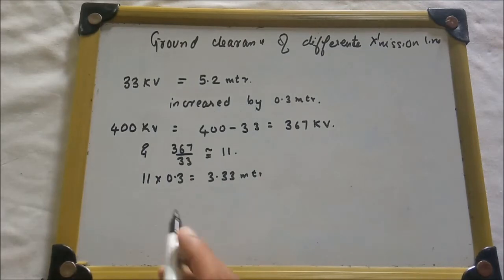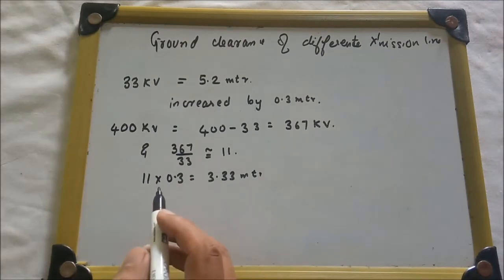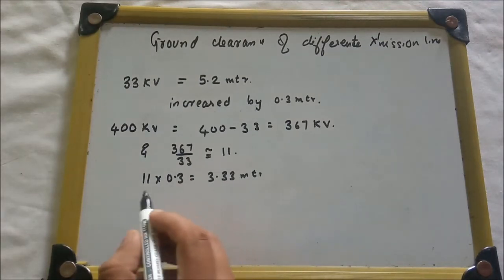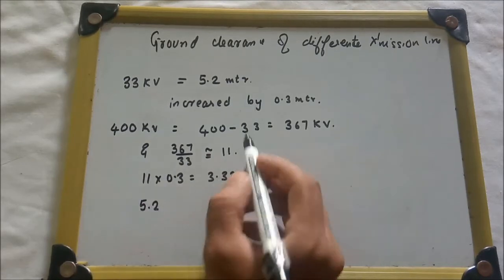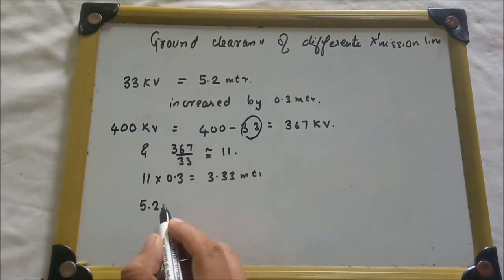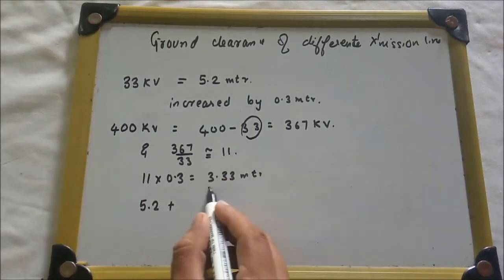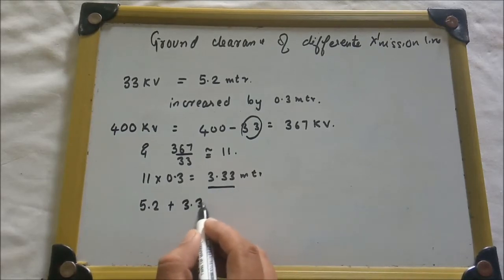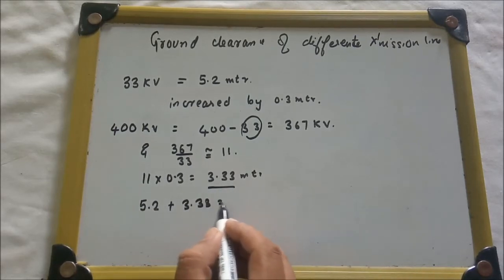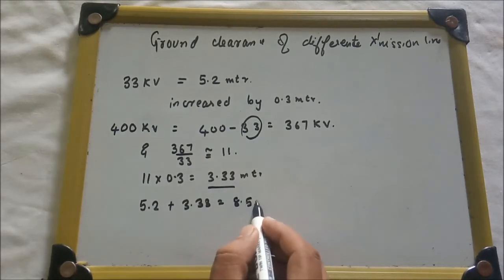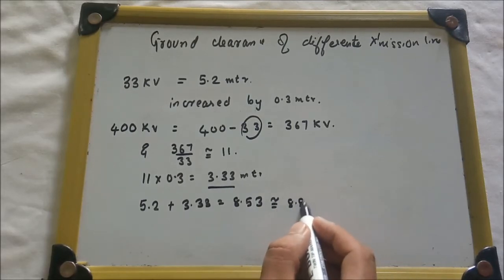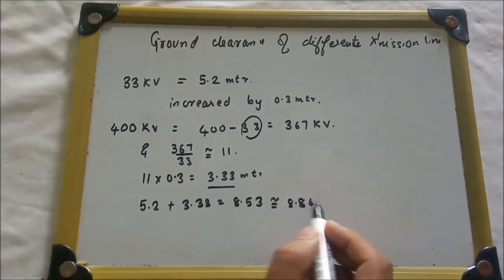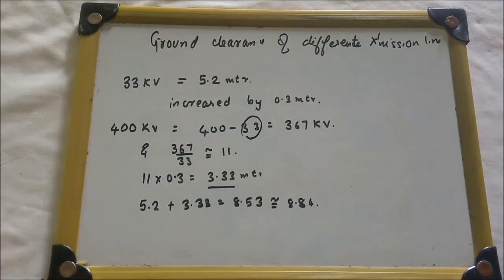So 11 multiplied by 0.3 equals 3.33 meters. As per the logic, the minimum ground clearance of the 400 kV bottom conductor is 5.2 plus 3.33, which gives us approximately 8.4 meters.